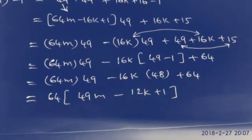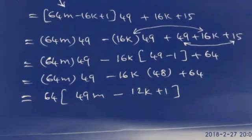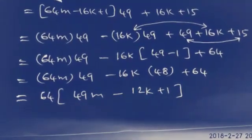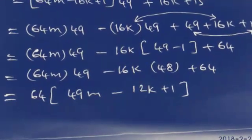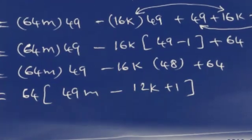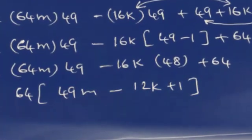Overall, we can factor out 64 as a common term, giving us 64(49m - 12k + 1).